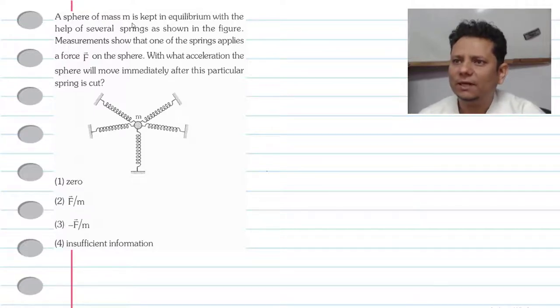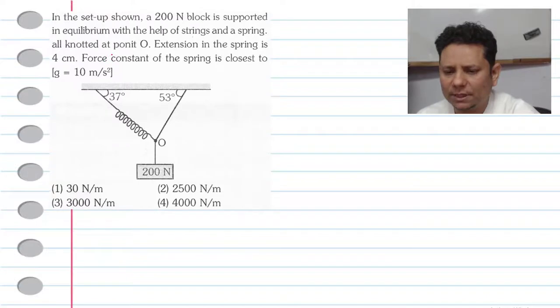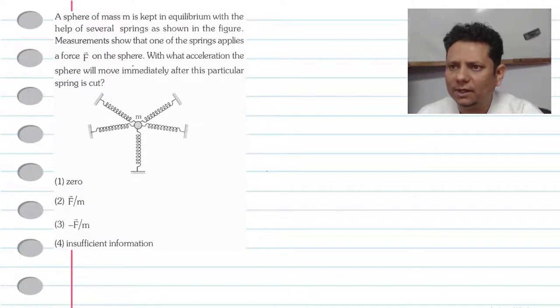The next question says: a sphere of mass m is kept in equilibrium with the help of several springs as shown in the figure. Measurements show that one of the springs applies a force F on the sphere. With what acceleration will the sphere move immediately after this particular spring is cut?